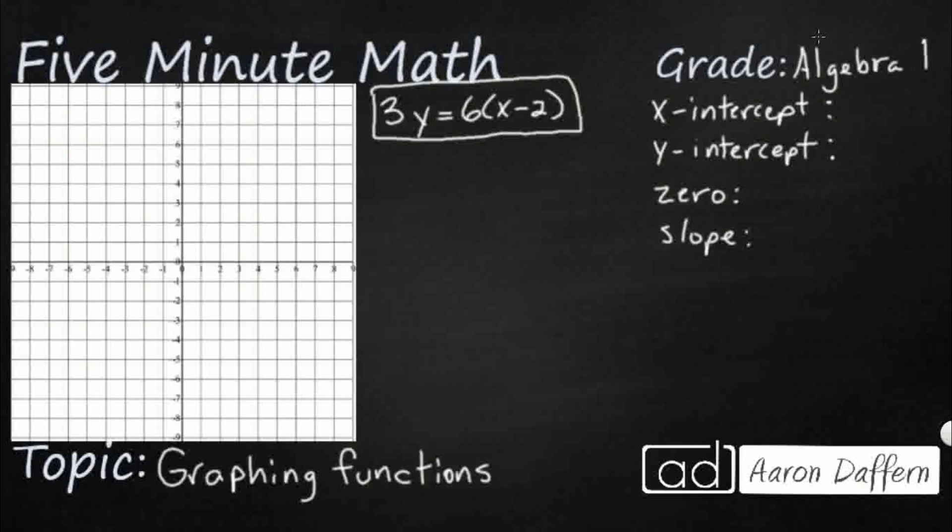So a lot of times in Algebra 1 we'll be given an equation, kind of like we see here, and we'll need to graph it or identify a graph that matches it. And so we're going to do that by looking at our intercepts, keeping track of the 0 and the slope.